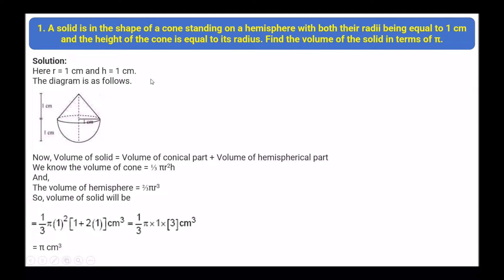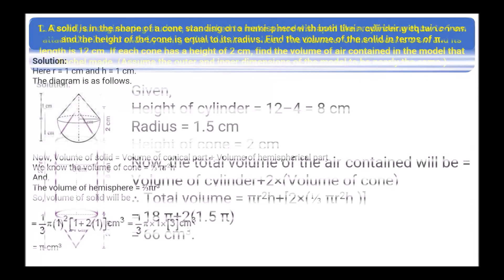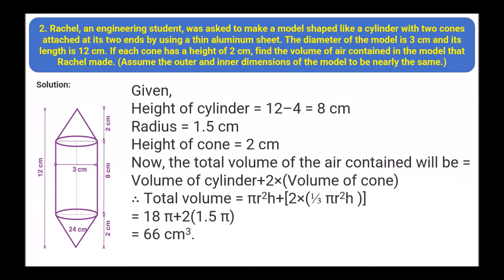The volume of the solid equals the volume of the conical part plus the volume of the hemispherical part. Volume of cone = (1/3)πr²h, and volume of hemisphere = (2/3)πr³. Putting in the values, we get 5π centimeter cube.